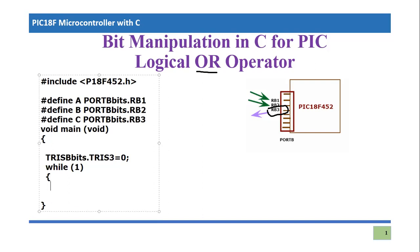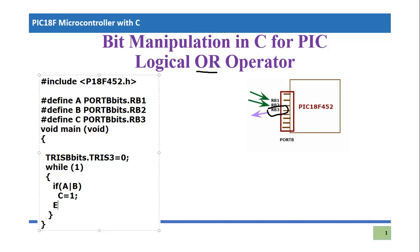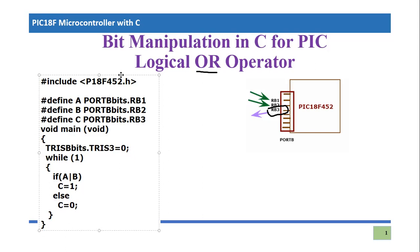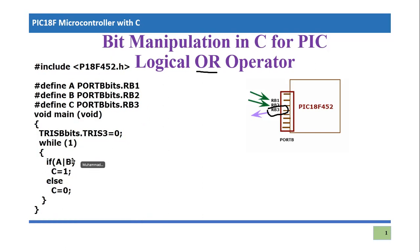Let me rewrite it clearly. If A OR B results in one, then C should be one; else C should be zero. I've aligned the proper orientation of every specific line of the code. Now this code will work correctly.